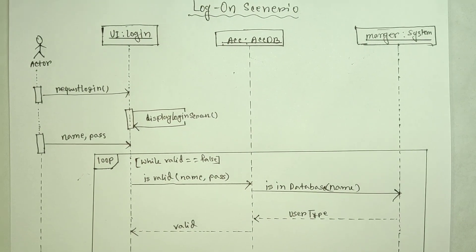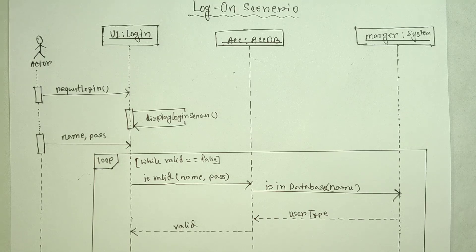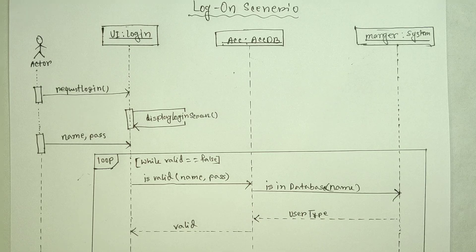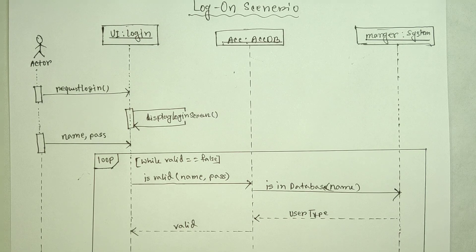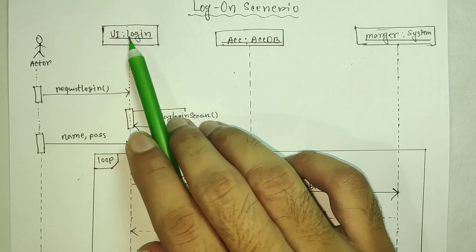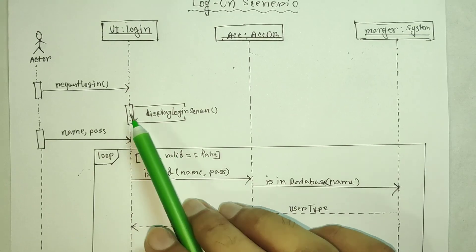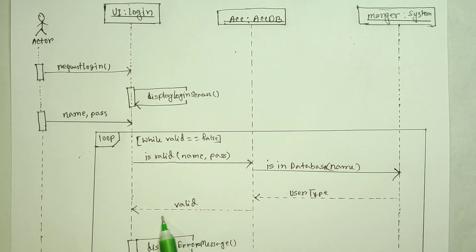This is the logon scenario sequence diagram. You can see which class is executed and which class is done. This is a simple example. The main thing is to see the diagram logically correct and logically connected. You can apply this technique to other scenarios as well.